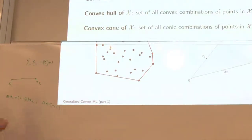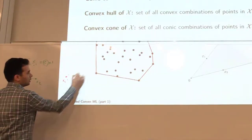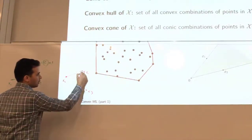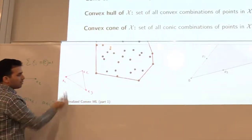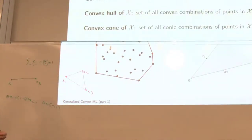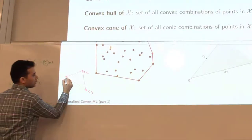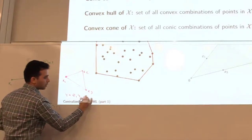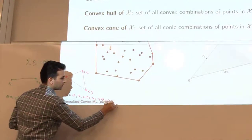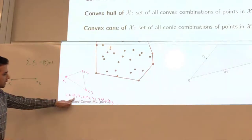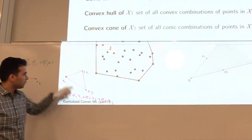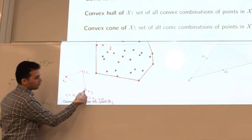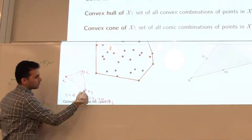What does it look like for three points? Say x1, x2, and x3. For three points, you can make this triangle, and you can make any point here by sweeping theta_1, theta_2, and theta_3. The outcome is theta_1*x1 + theta_2*x2 + theta_3*x3. If you set theta_1 equal to 1 and theta_2 and theta_3 equal to 0, you end up at this point. You can change these over a probability simplex to find any point inside this triangle.